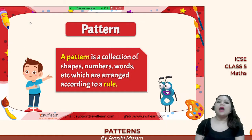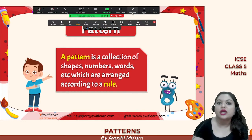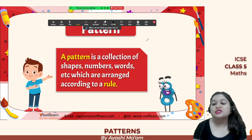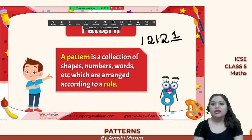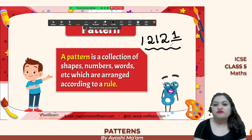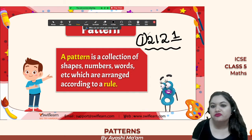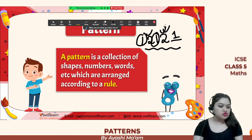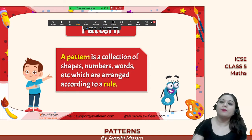So what is a pattern? A pattern is a collection of shapes, numbers, words, etc. which are arranged according to a rule. For example, one, two, one, two — the next one will be one. The rule is: after every one we have a two. With the help of this rule we can guess that after this two there will be a one.